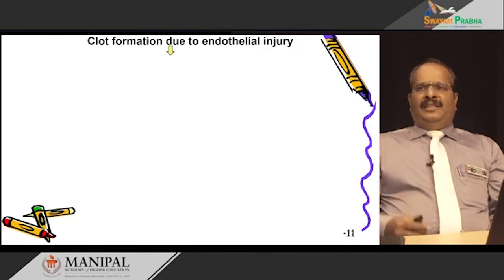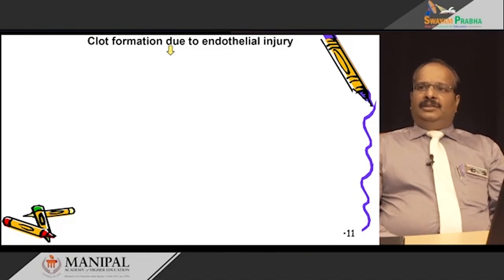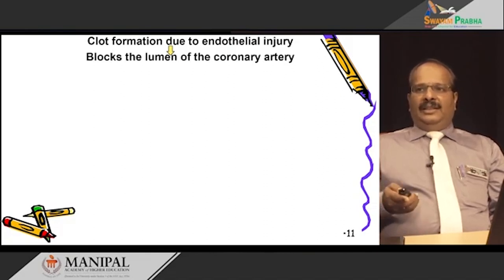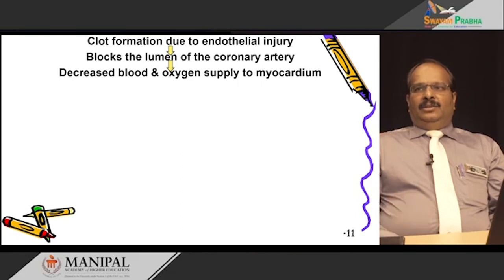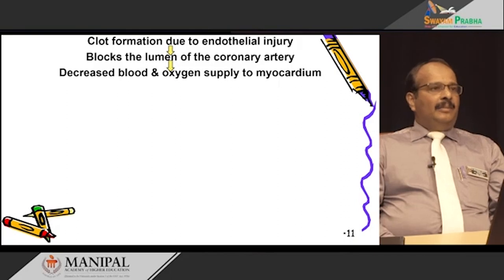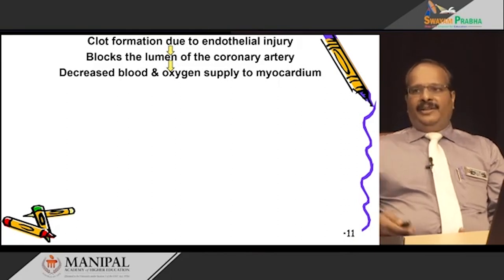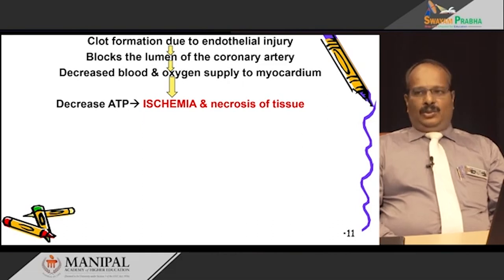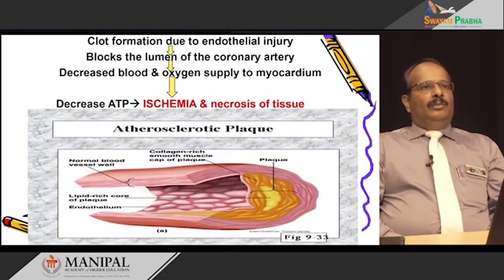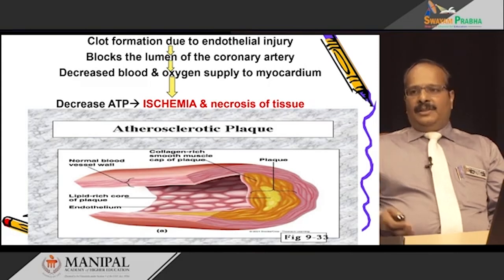Due to minor friction in that area, clot formation may occur due to endothelial injury, which further blocks the lumen of the coronary artery. Decreased blood supply means decreased oxygen supply to the myocardium, leading to decreased ATP synthesis, ischemia, and necrosis of tissues — resulting in myocardial infarction. This is the picture of the formation of the atherosclerotic plaque.